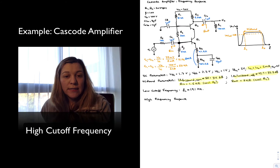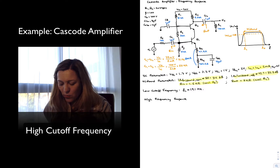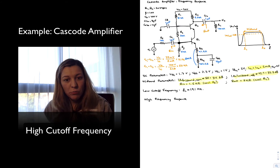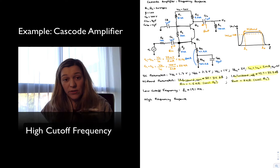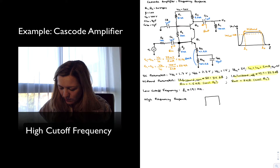We're going to take a look at the higher cutoff frequency for the cascode amplifier. To simplify our calculations, note that there are two stages here. I'm going to draw a block diagram of my two stages: this is my common emitter, and that's my common base.